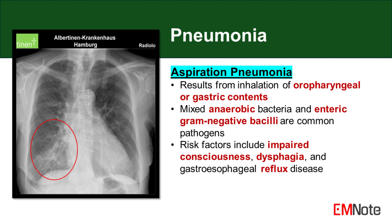The microbial etiology of aspiration pneumonia often involves a mixture of anaerobic bacteria from the oral cavity, such as Peptostreptococcus, Fusobacterium, and Prevotella species. Enteric gram-negative bacilli may also be involved, particularly in cases of gastric content aspiration.